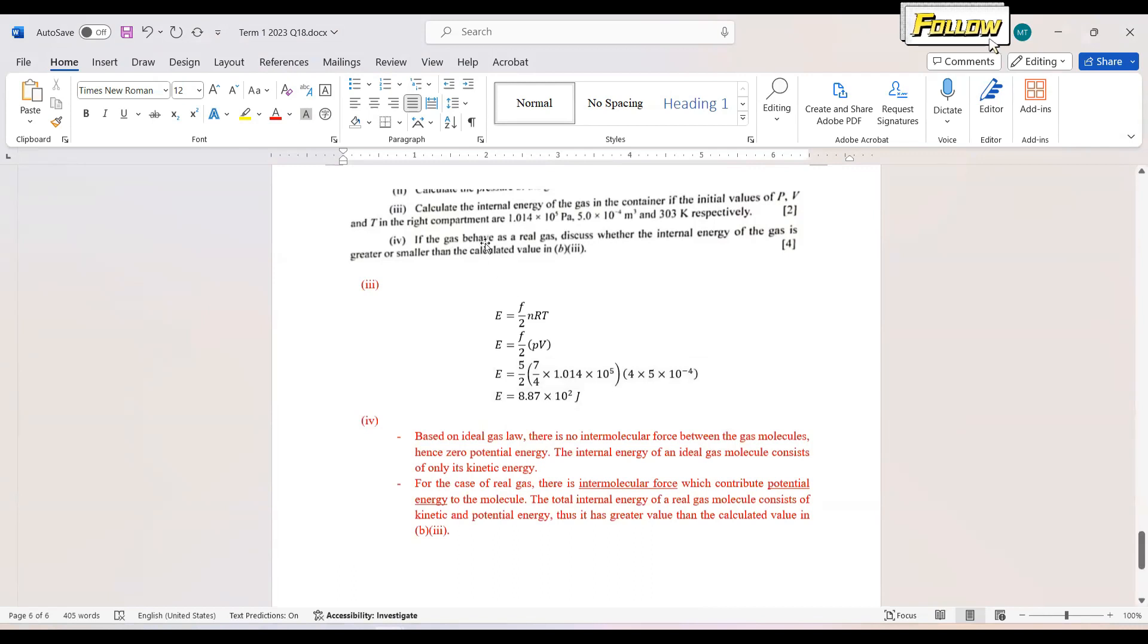Last question: if the gas behaves as a real gas, discuss whether the internal energy is greater or smaller than the calculated value in B(ii). This one is worth 4 marks, much smaller compared to question 18 and 19. You need to refer back to the ideal gas law. The ideal gas law states that there is no intermolecular force between the gas molecules, which means we have zero potential energy. The internal energy here that we calculated only consists of kinetic energy.